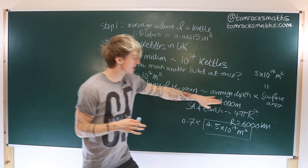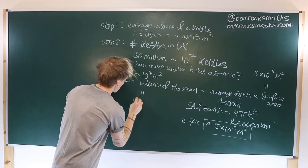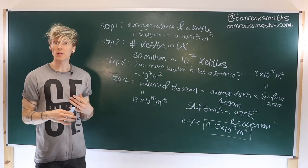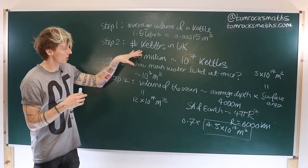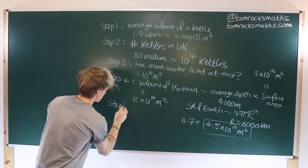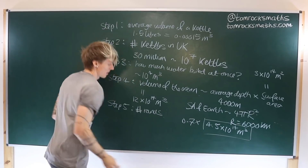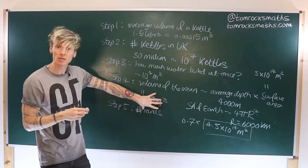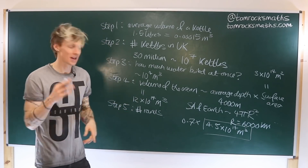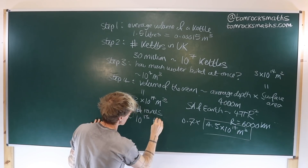We can now multiply these two values together to get the volume of the ocean, which is approximately 12 times 10 to the 17 metres cubed. Now that we know the volume of the ocean and how much water can be boiled at once, step five is to work out the number of rounds of boiling — the total volume to boil divided by how much we can boil at once — which tells us we need to boil all of these kettles approximately 10 to the 13 times.